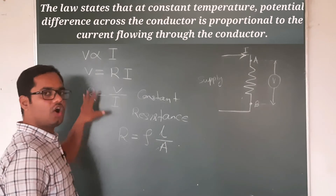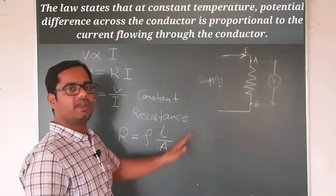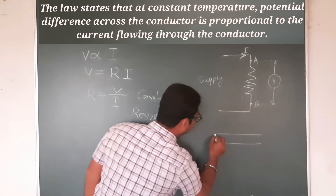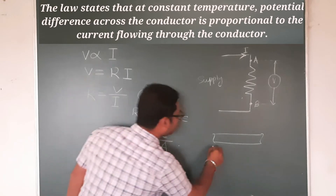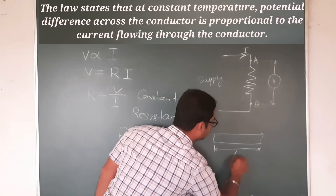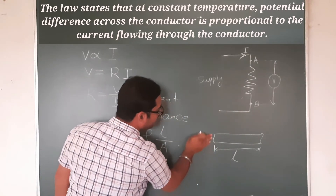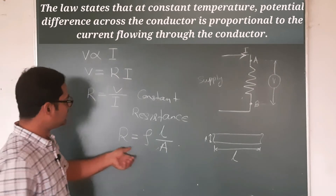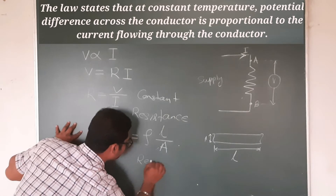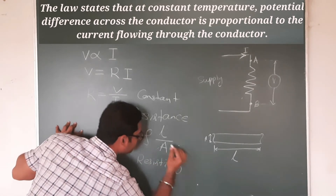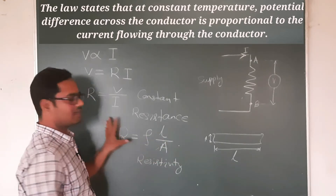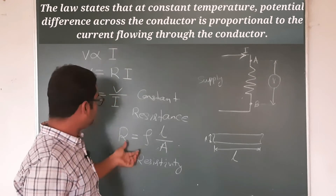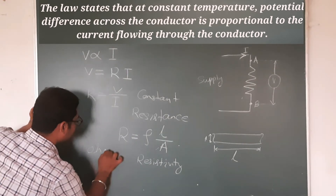R is the resistance — this is the opposition offered in any conductor which opposes the flow of charge. Consider a conductor with length L and area of cross-section A. The resistance is rho L by A, where rho is the resistivity constant. The unit of resistance is ohm, depending upon Ohm's Law — it is written OHM, ohm.